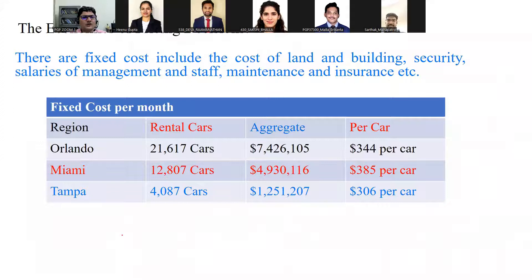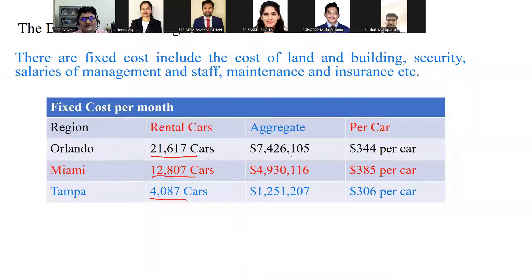Now let's talk about the economics of pricing decisions. Fixed costs include cost of land and buildings, security, salary of management and staff, maintenance, and insurance. Initially there are 21,617 rental cars in Orlando, 12,807 in Miami, and 4,087 in Tampa. The fixed cost in Orlando, divided per car, comes to $344 per car per month. Fixed cost is highest in Miami and lowest in Tampa. You may incorporate this fixed cost while making decisions in the simulation.